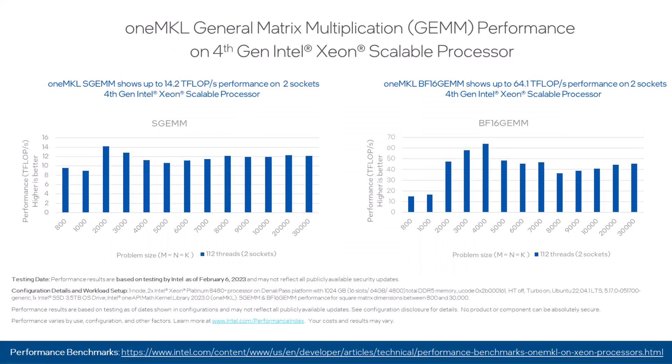On 4th Gen Intel Xeon Scalable Processors, also known as Sapphire Rapids, OneMKL allows you to perform BFloat16 matrix multiplication up to 4 times faster than standard single-precision general matrix multiplication. The support for BFloat16 data type results in significant acceleration of workloads such as machine learning models that use matrix multiplication in neural networks, scientific computations, and other training and inference operations. For more performance benchmarks of OneMKL on Sapphire Rapids, check out the link shown on the screen.